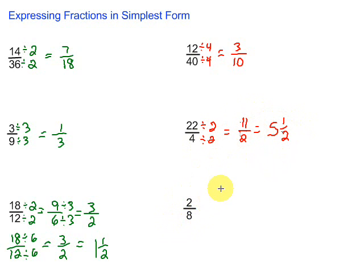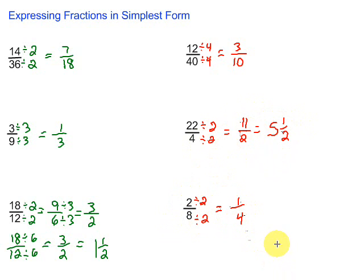And finally, 2 over 8. Let's see if 2 goes into 8 — sure it does. So divide by 2 top and bottom: 2 divided by 2 is 1, and 8 divided by 2 is 4. There were some examples of expressing fractions in simplest form, both improper fractions and your standard kind of fractions.